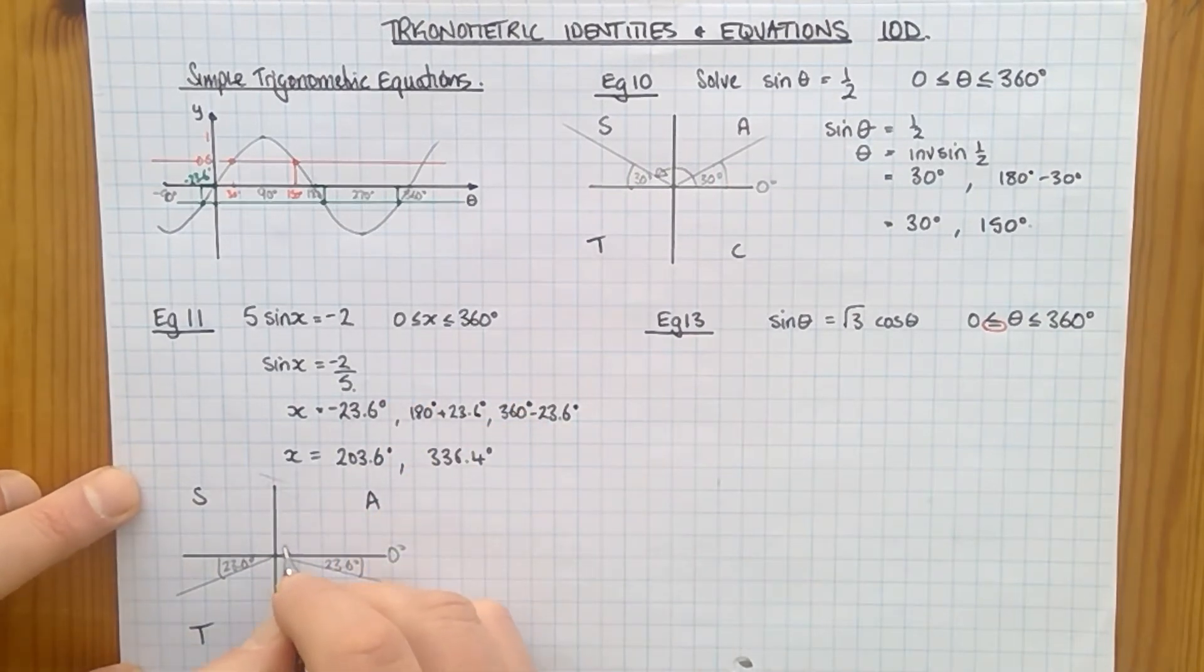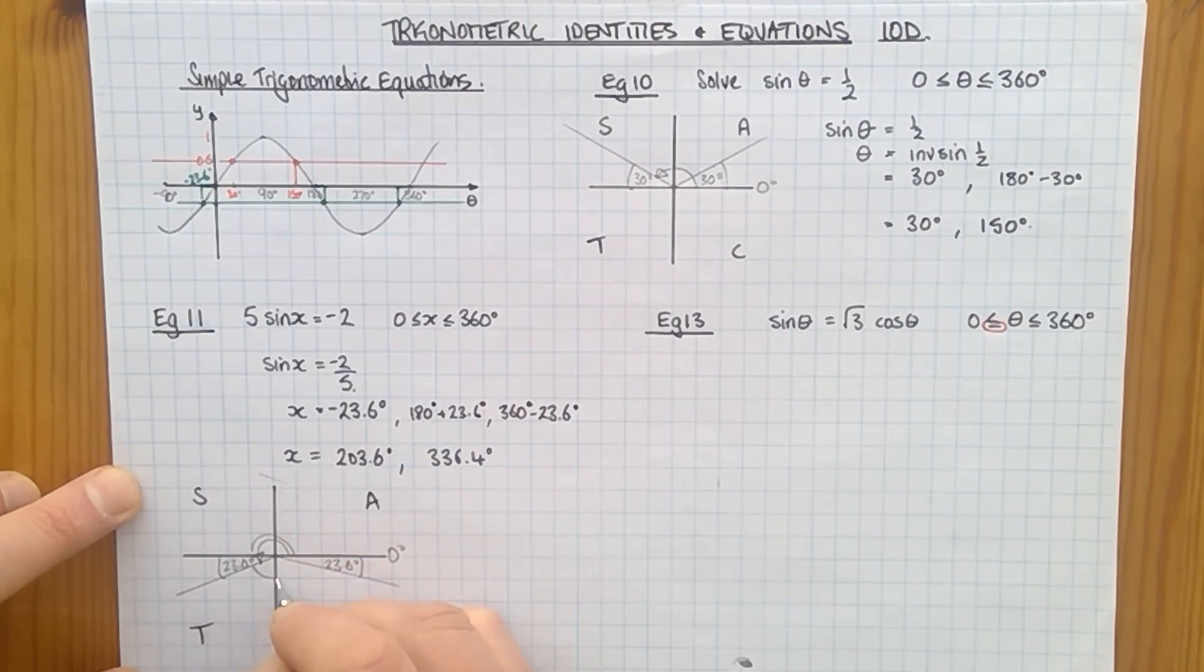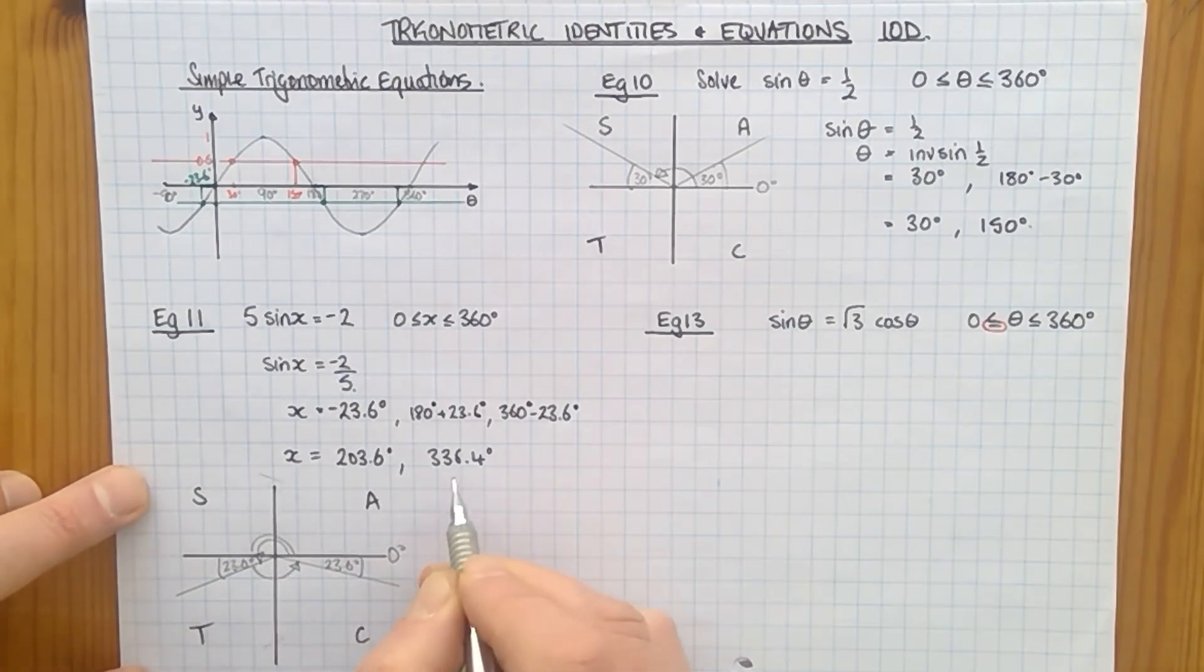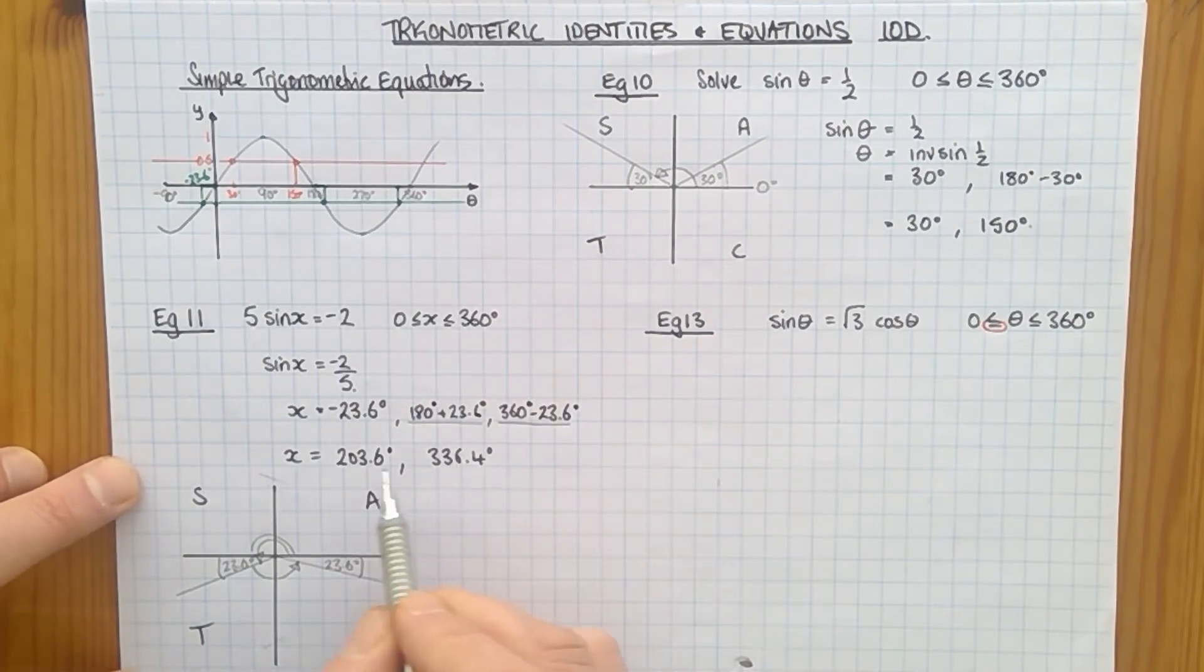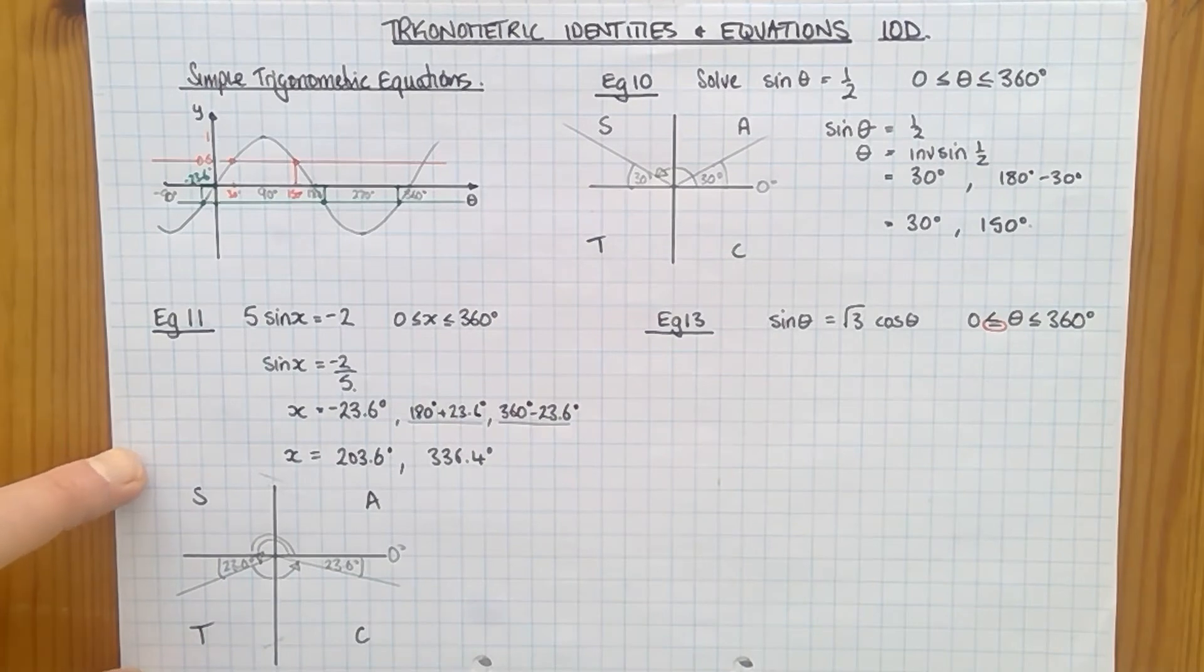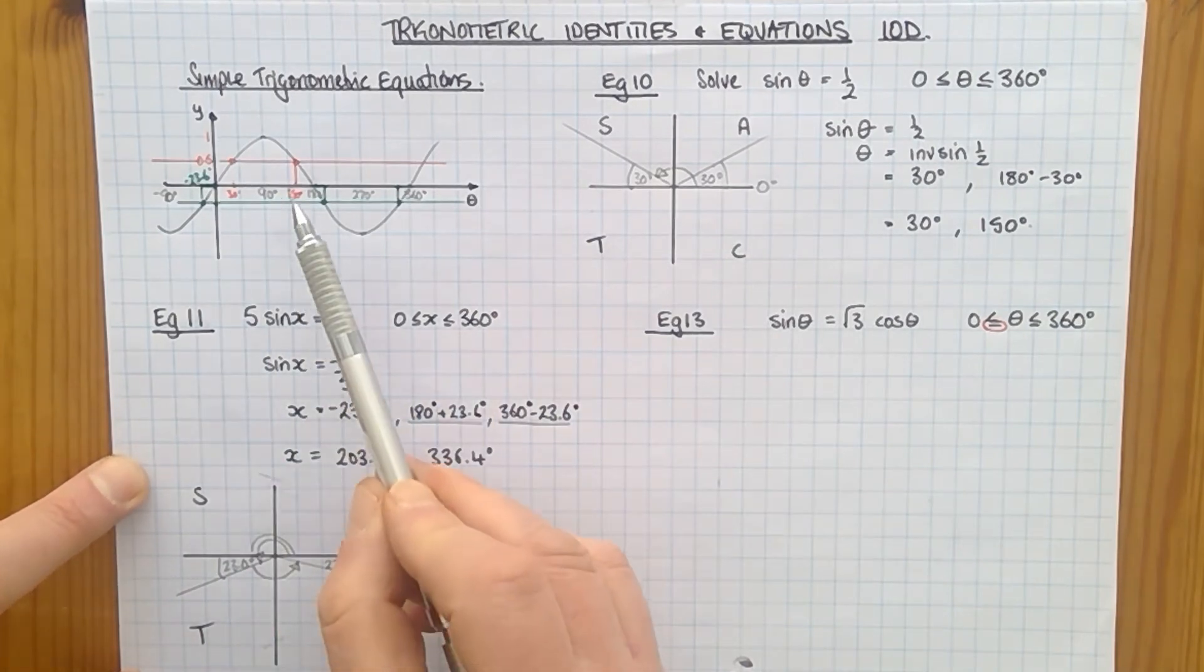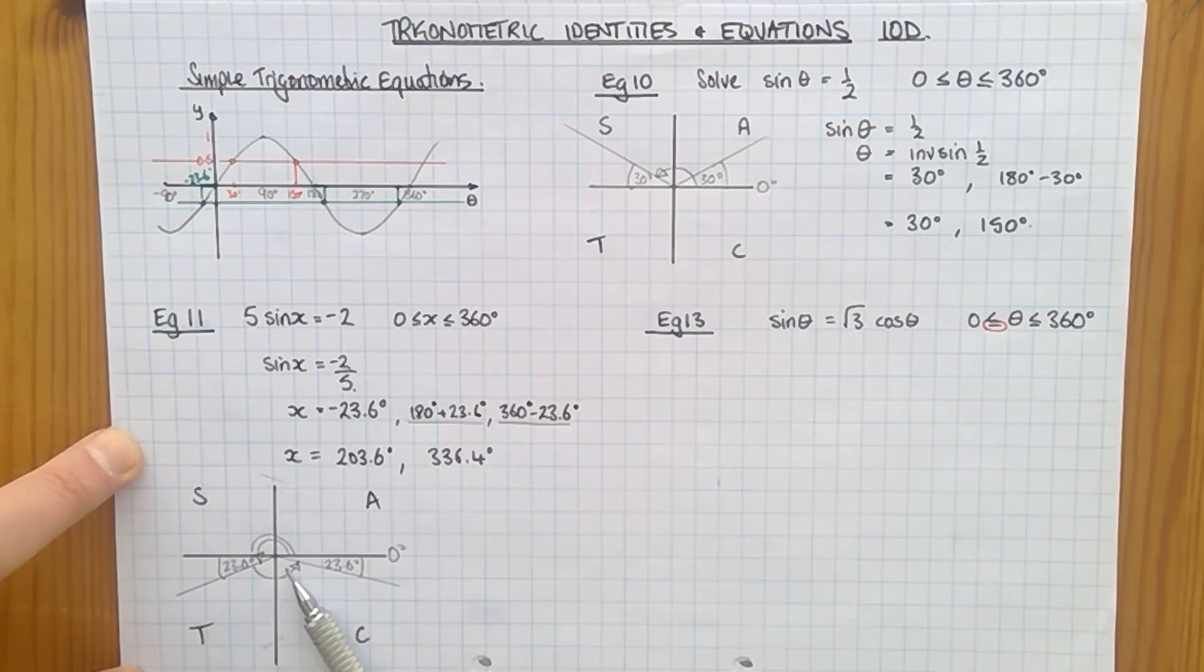So let's start at 0, travel around. The first position I get to is there. 180 plus the 23.6 gives me the 203.6. The next value, if I continue going round, is that one. Almost all the way around. And that position there is 360 take away the 23.6, which gives me the 336.4. So that's how you can solve this one using either the sine curve or your CAST diagram.